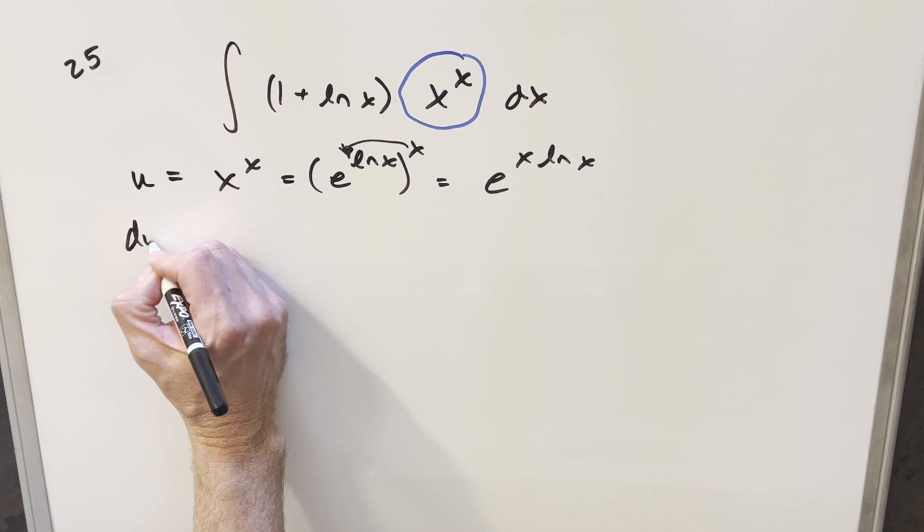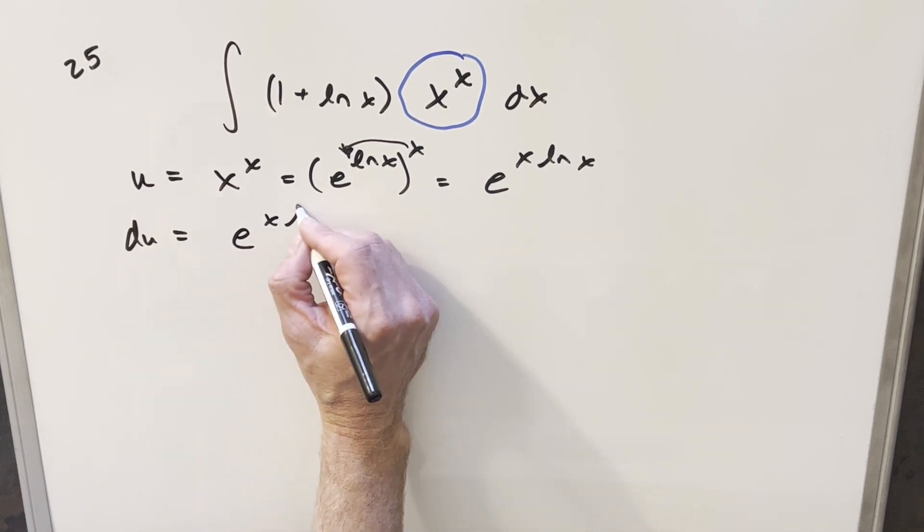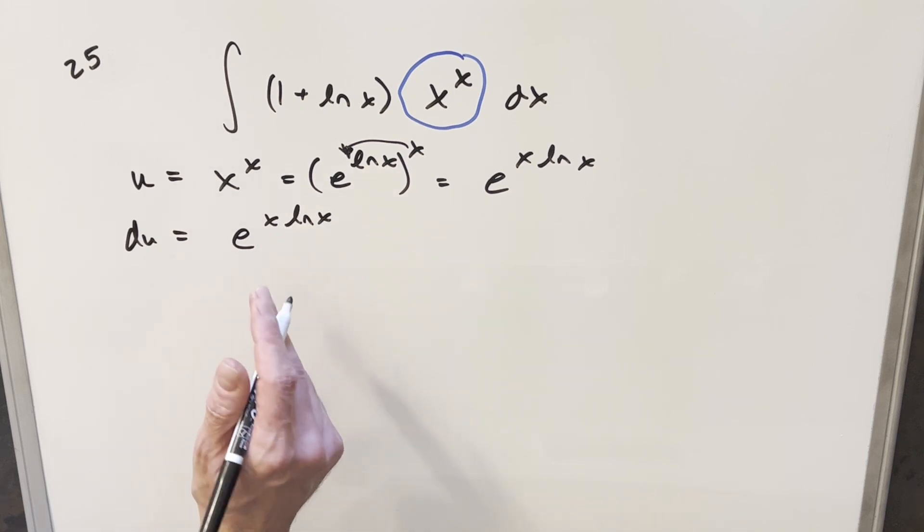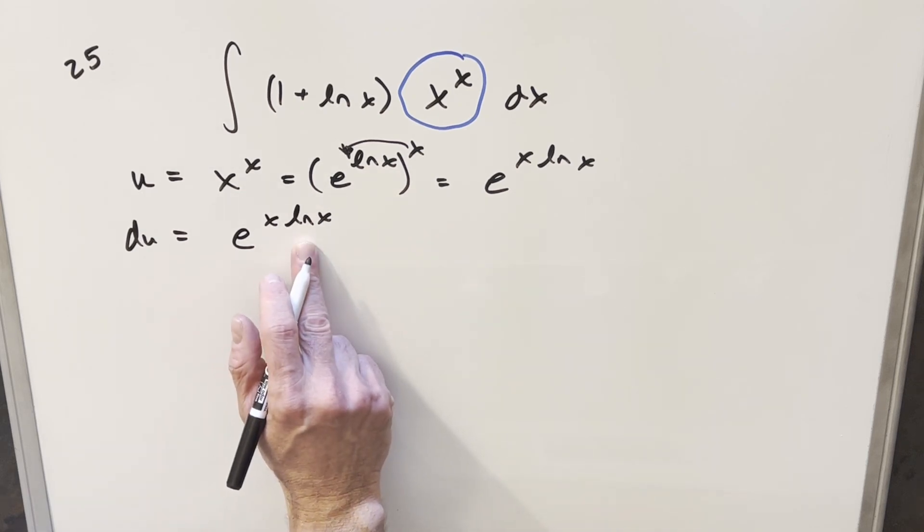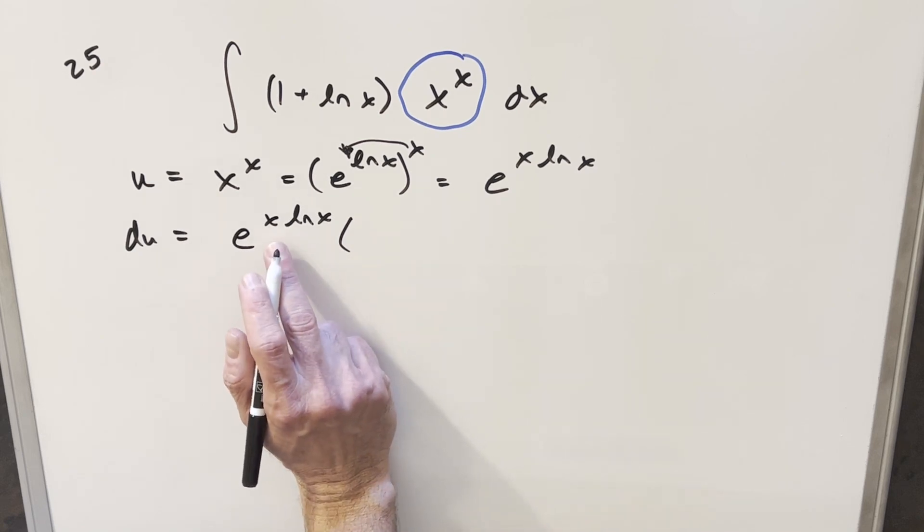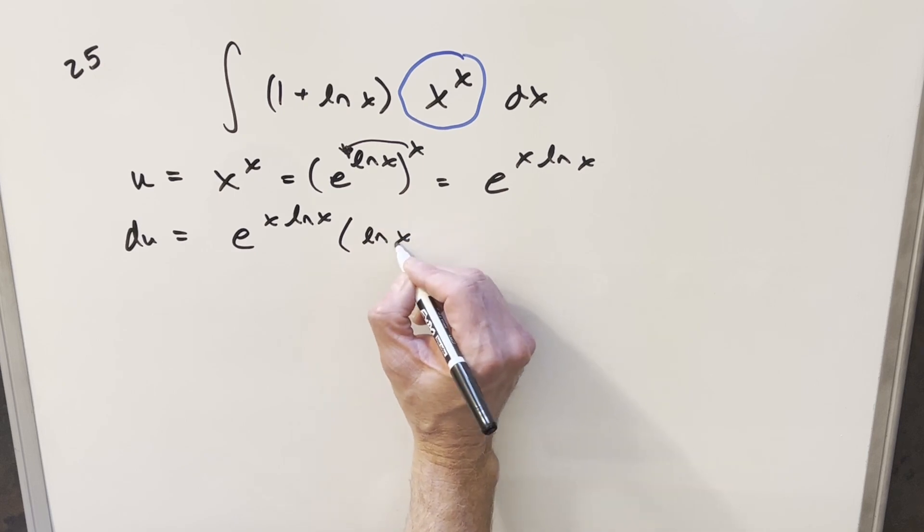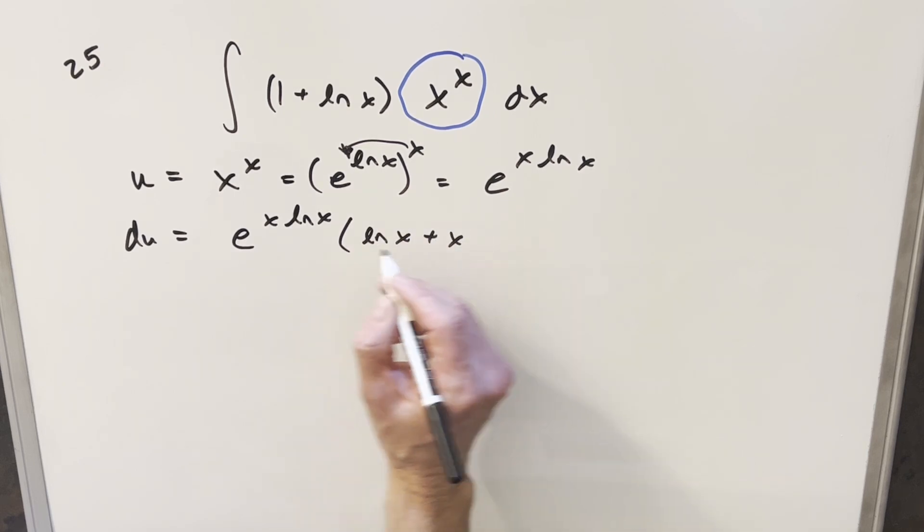And then we'll just take a derivative. So for du, we're going to have derivative of this is going to be e to the x ln x. But then we need the chain rule on x ln x and then the product rule. So using the product rule on this,